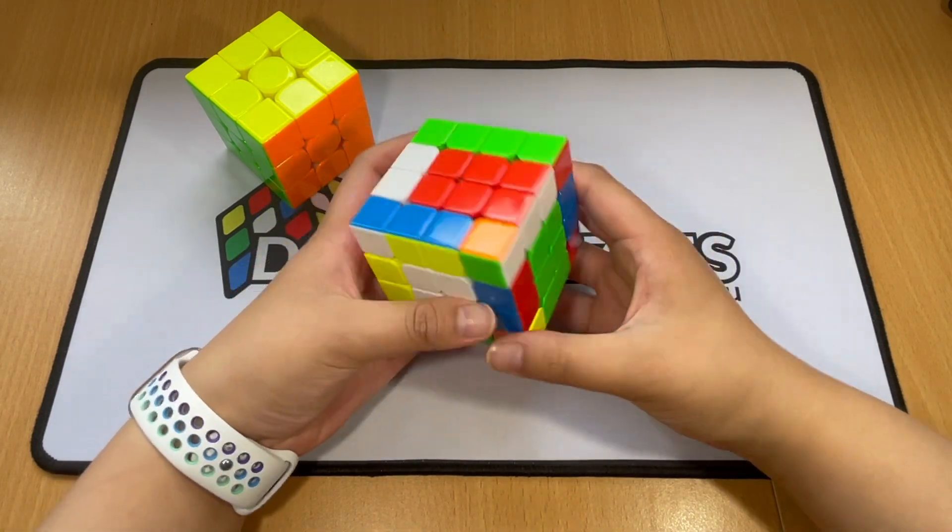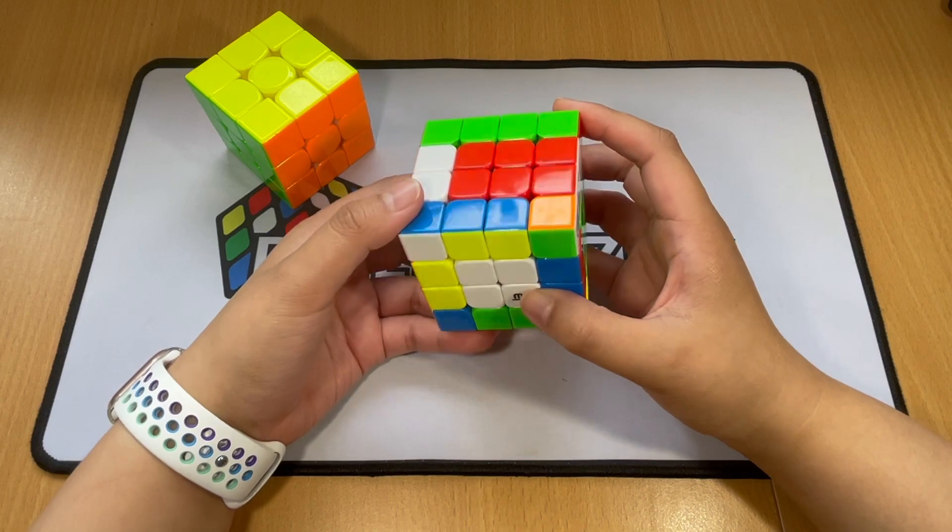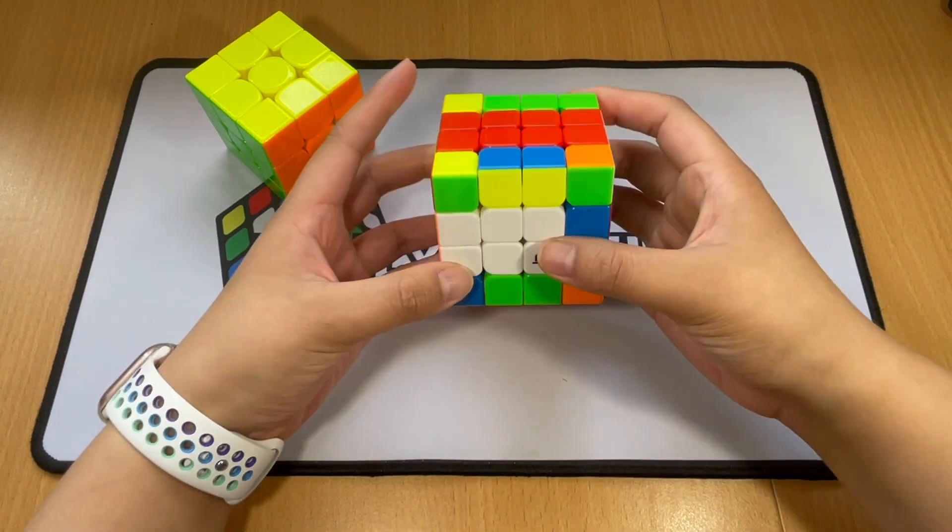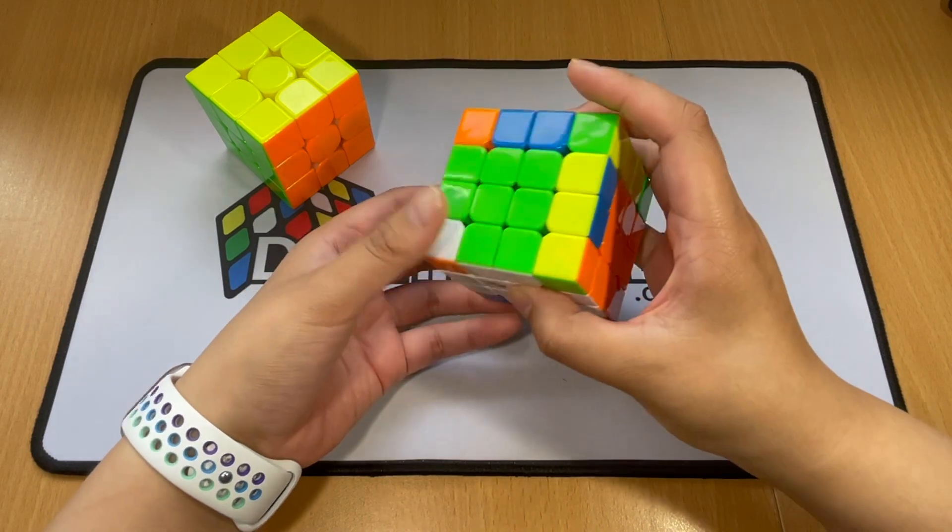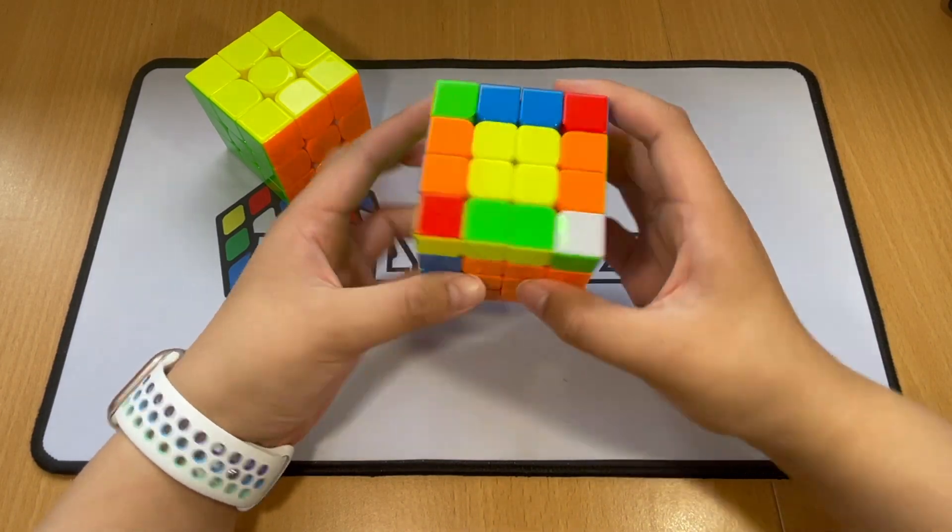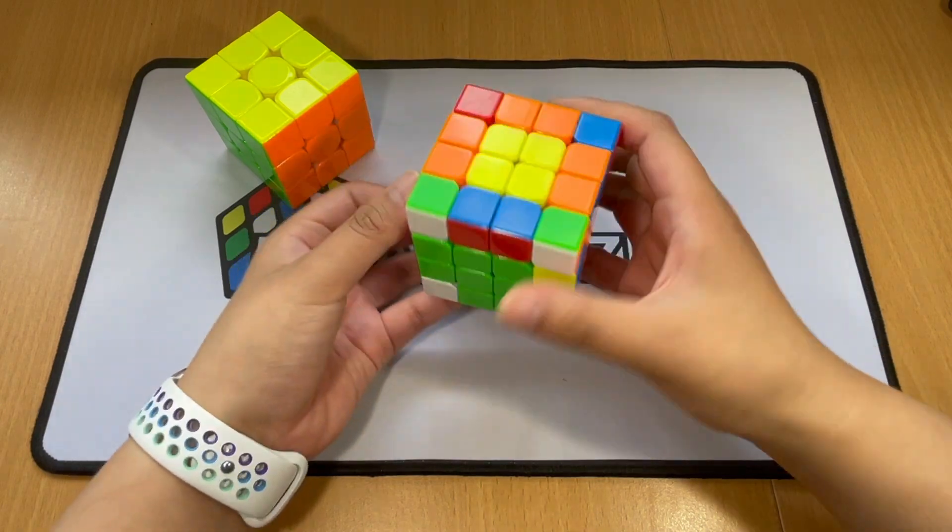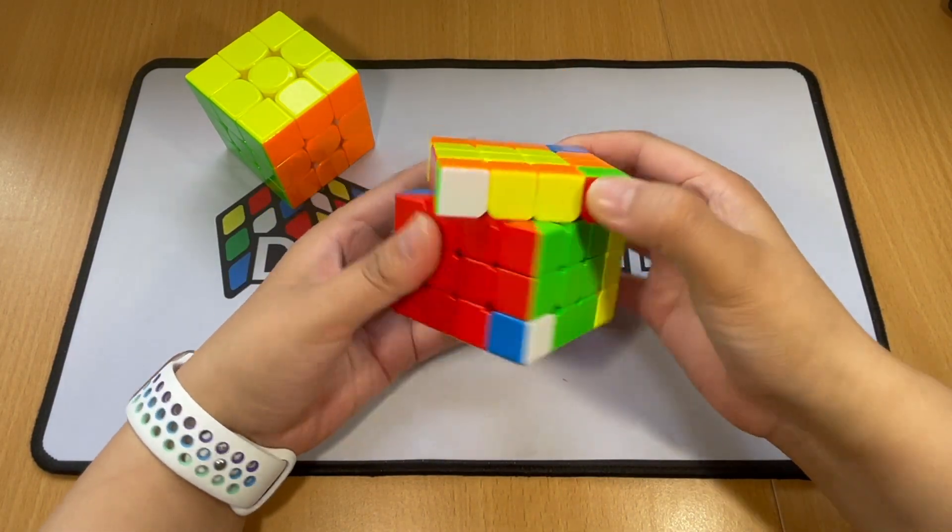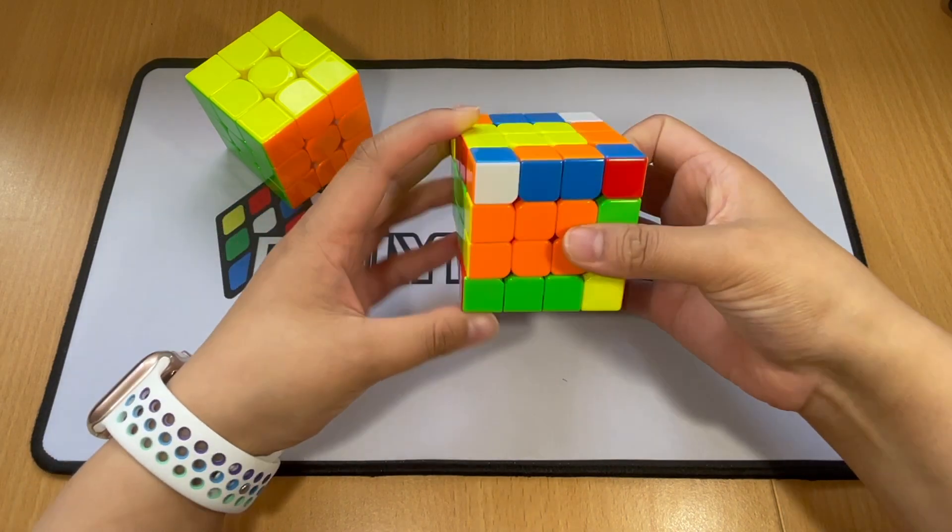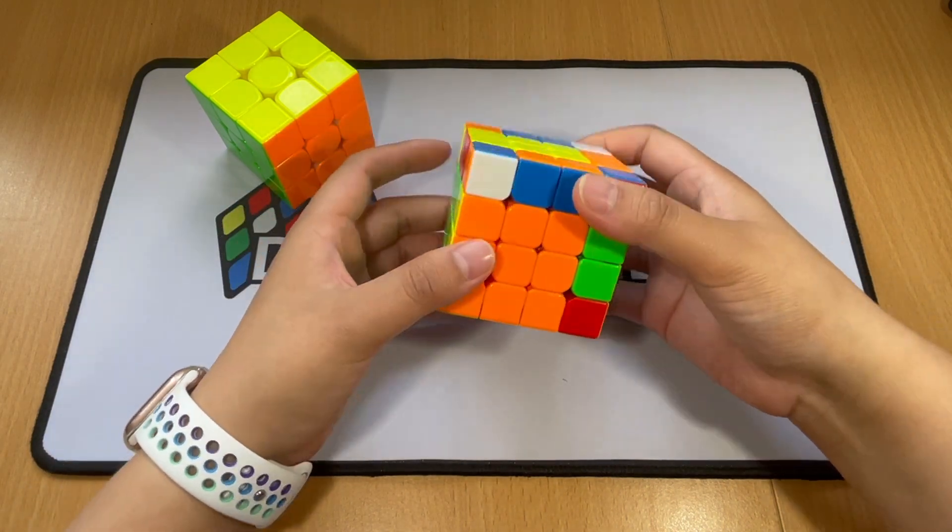The next step is basically like solving a 3x3. I want to make a white cross. There you go, I've got my white cross with the centers matching, just like on a 3x3. At this step, if you know F2L, you could do F2L to solve this. If you don't know F2L, you could use the same algorithms you learn in basic methods.